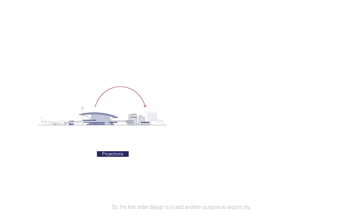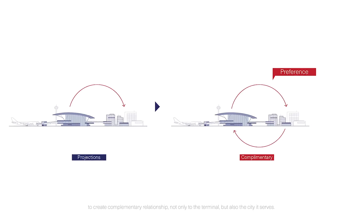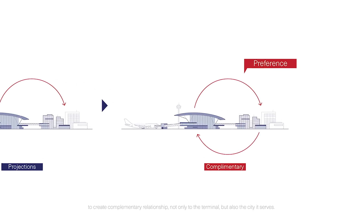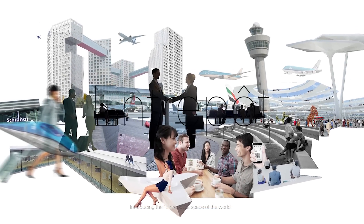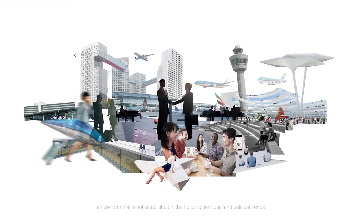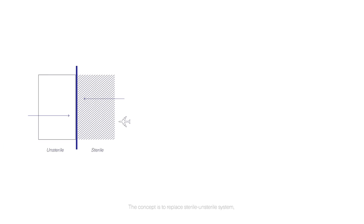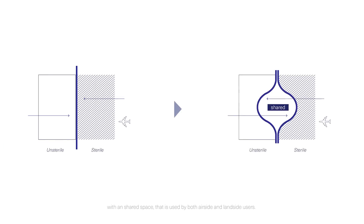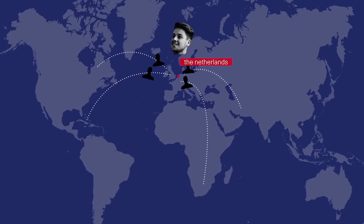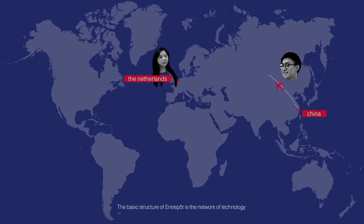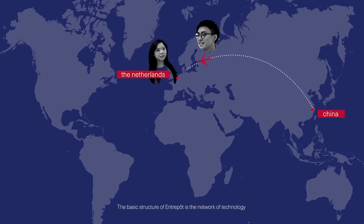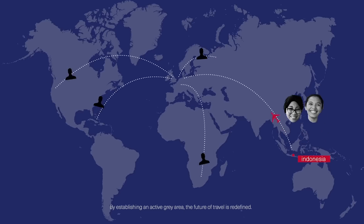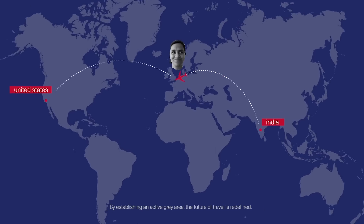With the first order design, the aim is to add another purpose to airport city — to create a complementary relationship not only to the terminal, but also to the city itself — introducing the anthropological space of the world, a new form not established in the notion of territorial trends. The concept is to replace the sterile system with a shared space used by both air-side and land-side users. The basic structure of the anthropo is the network of technology. By establishing an active gray area, the future of travel is redefined.